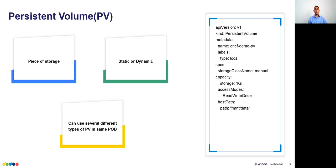Persistent volumes can be static or dynamic. With a dynamic persistent volume, we don't need to create it manually — the storage provisioner takes care of provisioning the PV automatically.